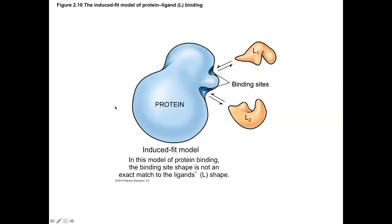This is an example of the induced fit model, where you have an active site or multiple active sites, and perhaps the substrate doesn't fit exactly into that location. Something has to happen to the enzyme — a conformational shape change — in order for an induced fit to take place. Cofactors can oftentimes assist in making the active site available to the substrates so that the enzymes can do their job.